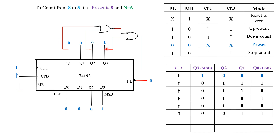Further, we need to continue with the actual down count operation. Once we have fed the initial value to the output, in the next stage we are supposed to connect the output of this NOR gate to the PL. As we can observe, the output of the NOR gate is connected to PL — it will now be operating as per our requirement. We are at the down count operation. PL is equal to 1, and the output of this combination of NOR gates is giving us the value 1.